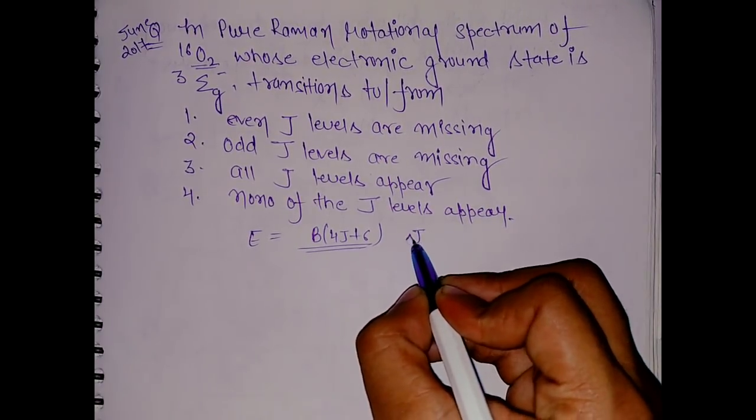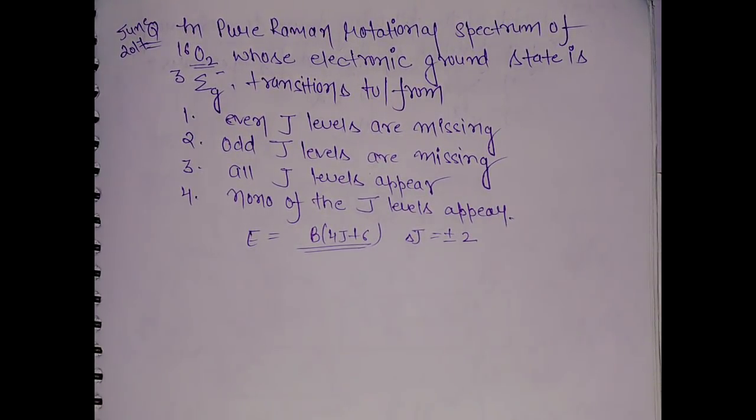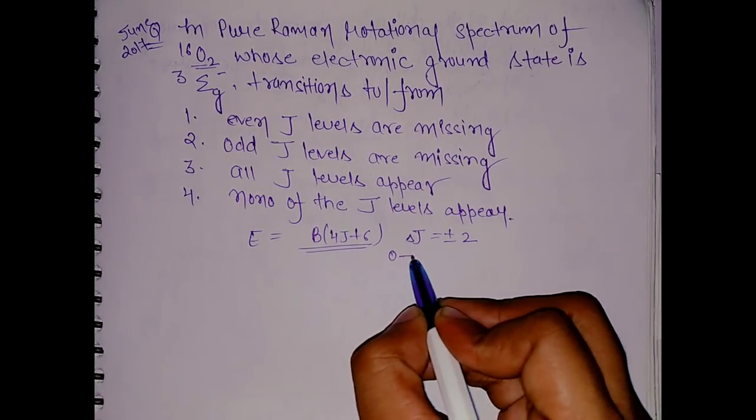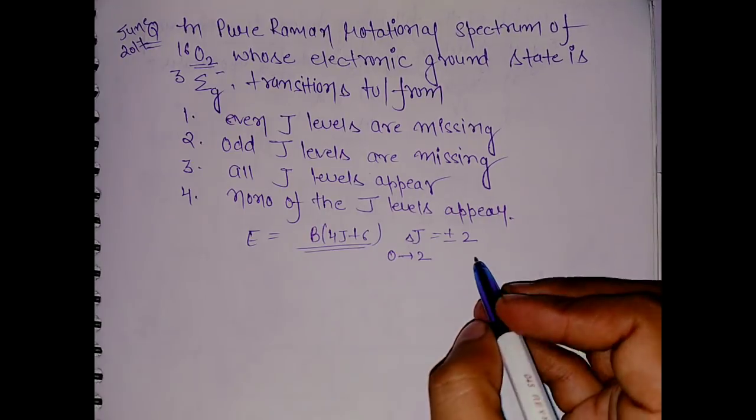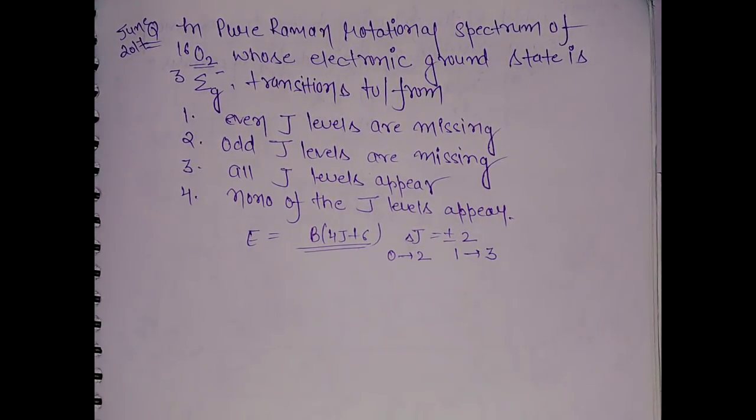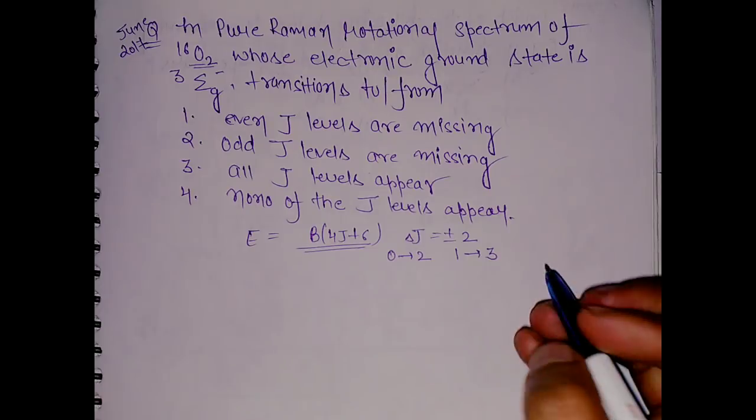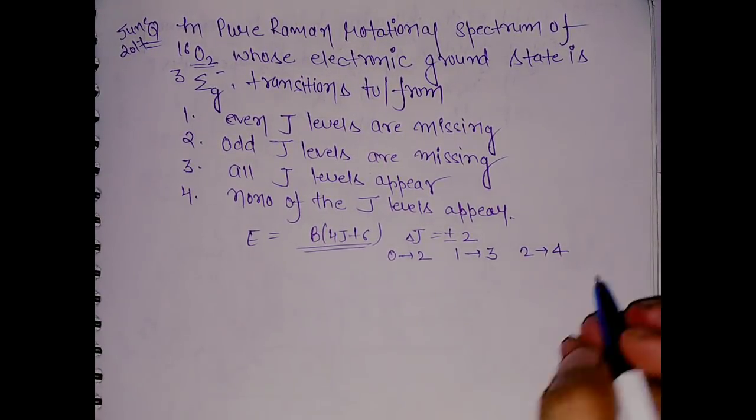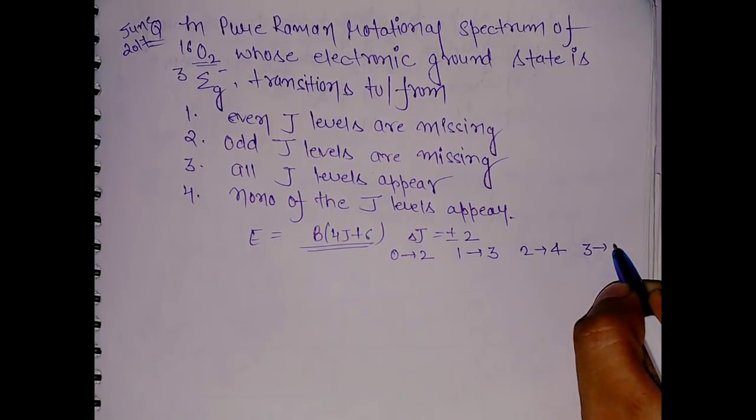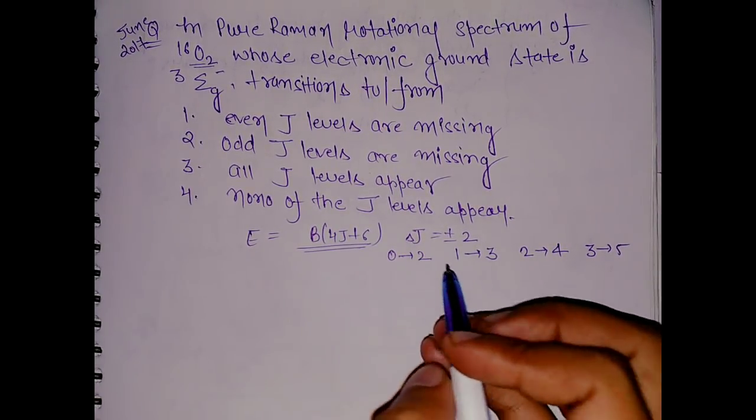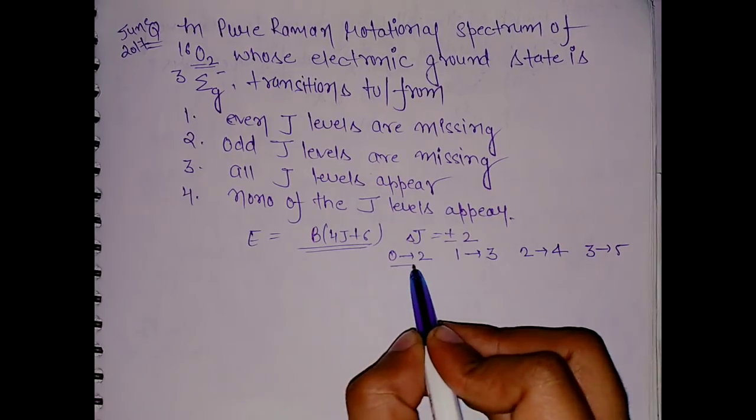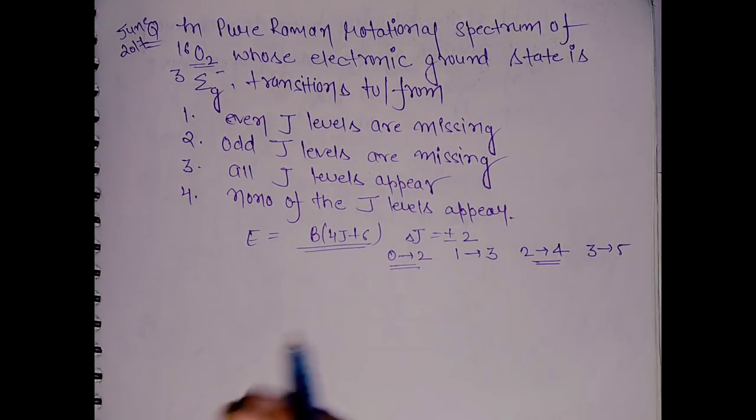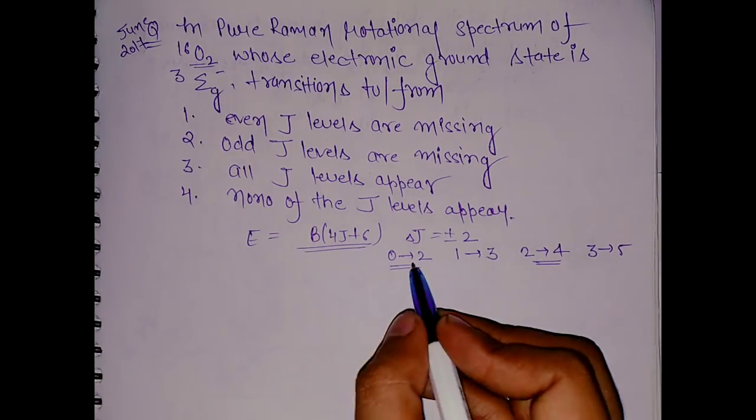The first transition will be from 0 to 2, the second will be from 1 to 3, another will be from 2 to 4, and another from 3 to 5. Those originating from even numbers will be absent in the spectra of 16O2.